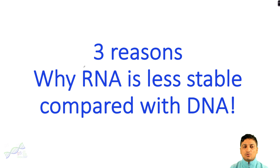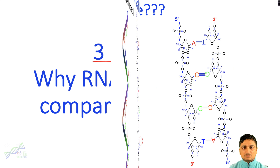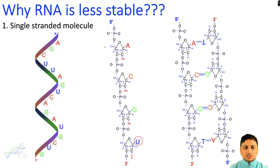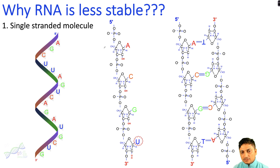We will focus on three different reasons why RNA is less stable compared with the structure of DNA. The first reason is the presence of a single-stranded molecule in RNA and the presence of a double-stranded molecule in DNA.